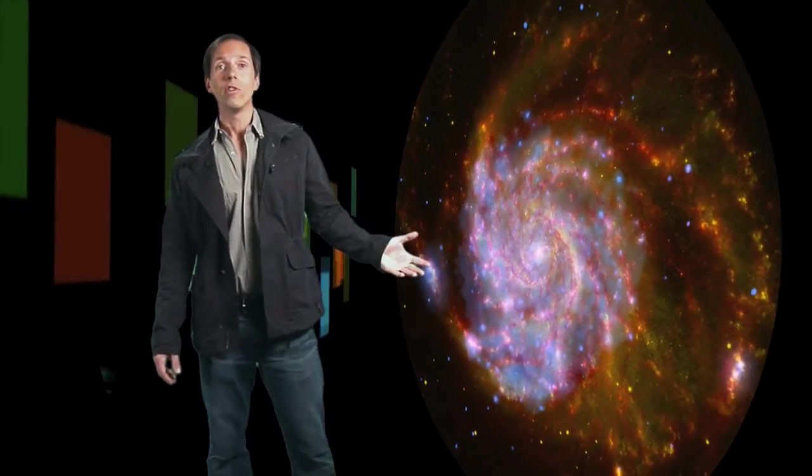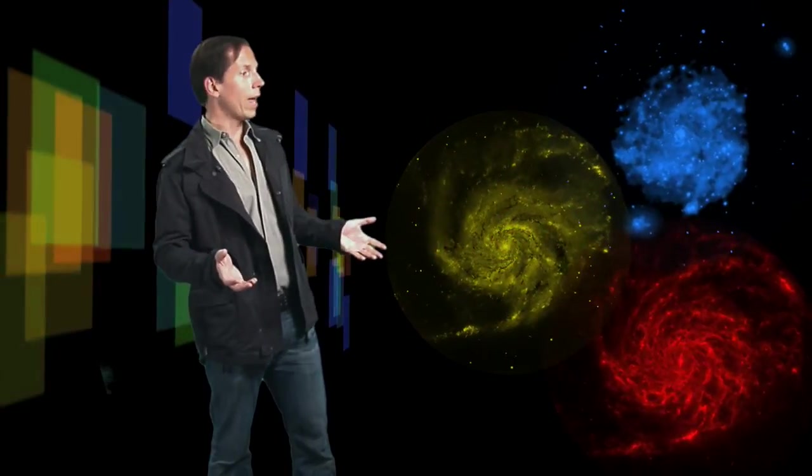This new image goes even further, combining each of the previous observations into a single view. Blue features represent X-rays, while the red colors are infrared. Visible light is yellow, which itself is a combination of red and green.